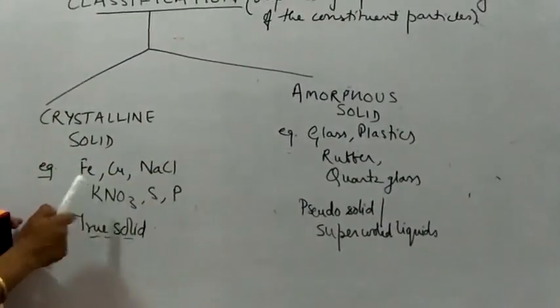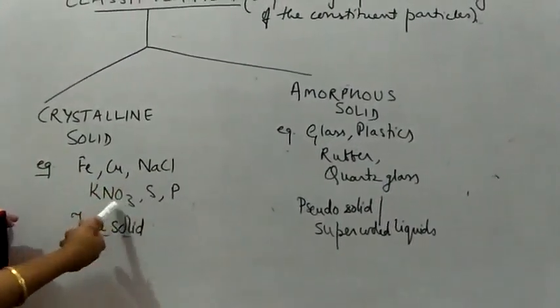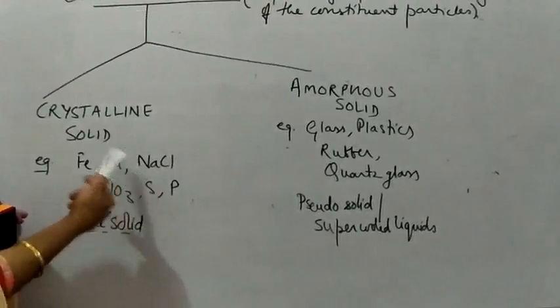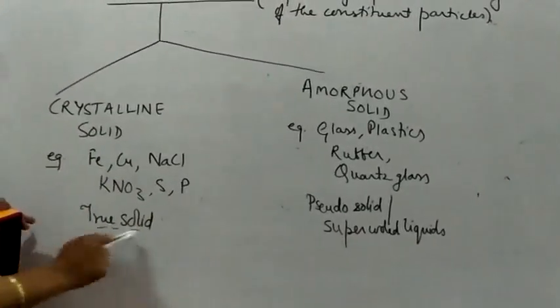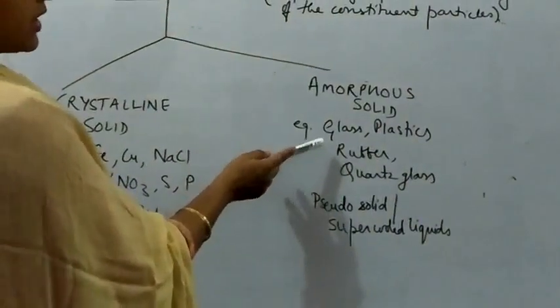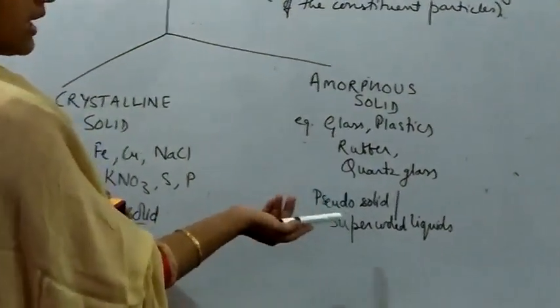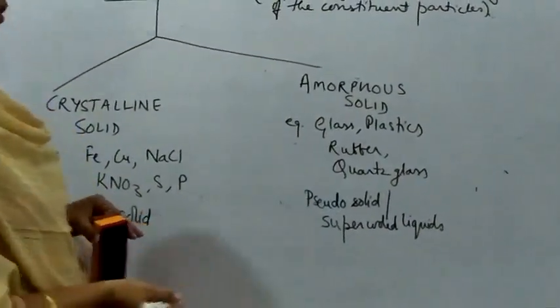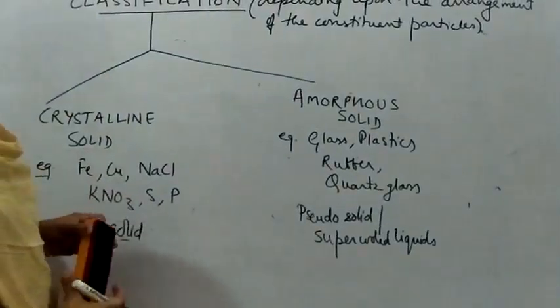So, solids have been divided into two types. Crystalline solid and amorphous solid. We have taken the few examples from our daily life. Iron, copper, NaCl, potassium nitrate, sulfur, phosphorus. These are the example of crystalline solid. And they are known as the true solid. Amorphous solids, we have got glass, plastics, rubber, quartz glass. And they are known as pseudo solid or super cooled liquid.